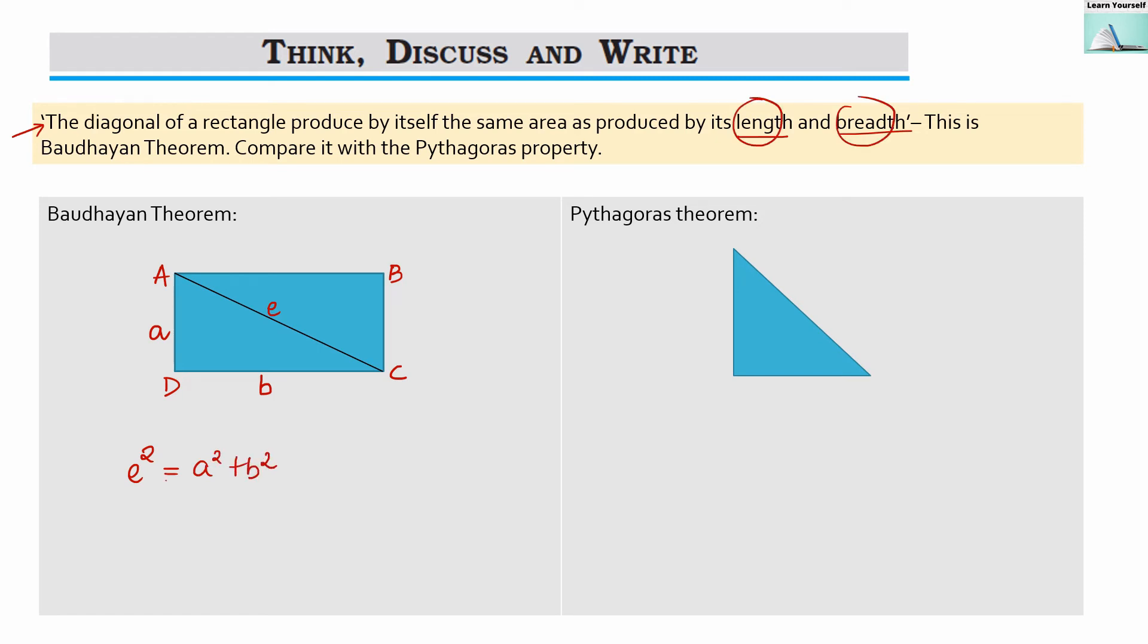Now the same thing we can see here in Pythagoras theorem also if our right angle triangle is ABC, in that we know that this is A, this length is B and then E will be the hypotenuse. Then we know that according to Pythagoras theorem, E square equals to A square plus B square.